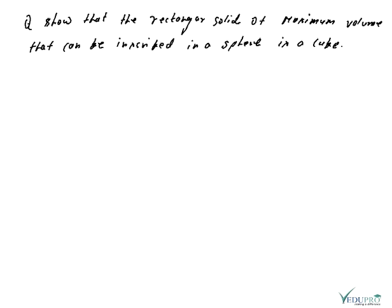This means that there is a rectangular solid, just like a cuboid. What do we have to prove? Maximum volume. The volume has three independent variables: length, breadth, and height.